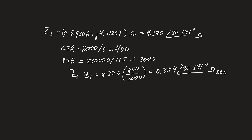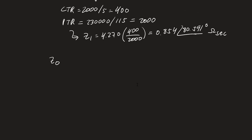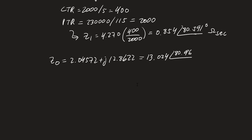We can do the same for the zero sequence impedance, which we'll need for the zero sequence compensation factor. Z0 is 2.04572 + j12.8622 ohms, which converts to polar form as 13.024 at an angle of 80.963 degrees in primary ohms. Converting to secondary terms by multiplying by CT ratio and dividing by PT ratio gives 2.605 at an angle of 80.963 degrees in secondary ohms.